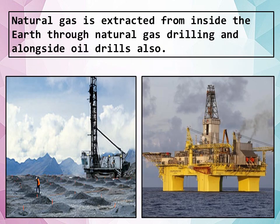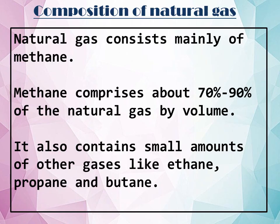Natural gas is extracted from inside the earth through natural gas drilling or alongside oil drills. Natural gas consists mainly of methane, which comprises about 70 to 90 percent of the natural gas by volume. It also contains small amounts of other gases like ethane, propane and butane.